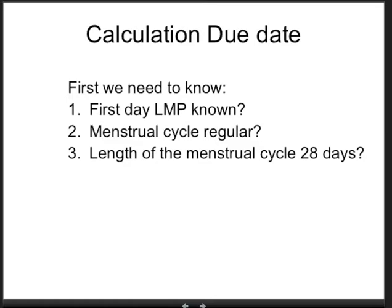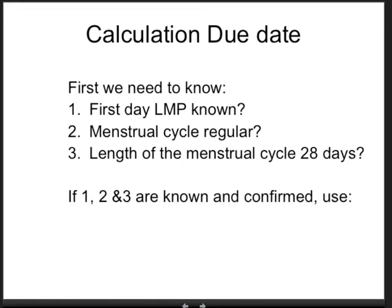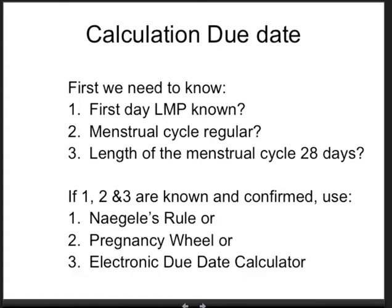For calculating the due date, we first need to know three things: Is the first day of the last menstrual period known? Is the menstrual cycle regular? And is the length of the menstrual cycle 28 days? These are three essential questions. If all three are known and confirmed, we can use either Naegele's rule, the pregnancy wheel, or an electronic due date calculator.